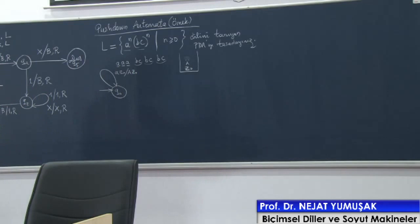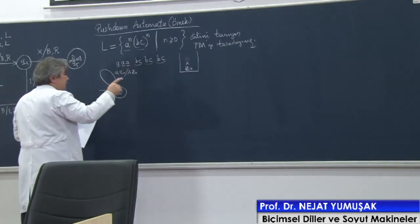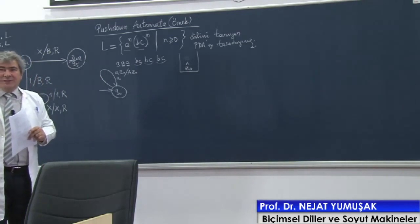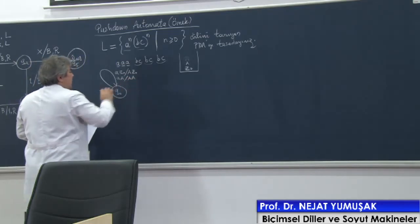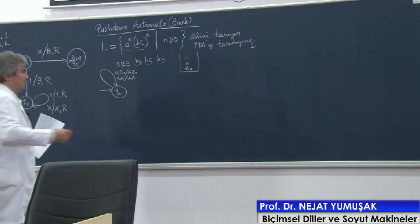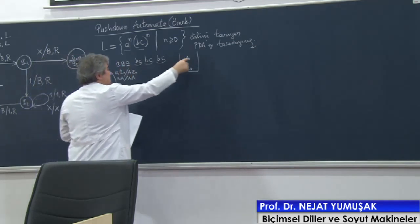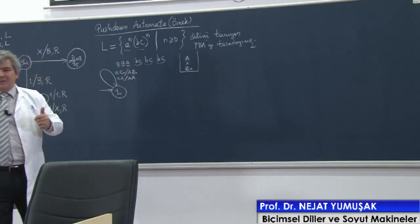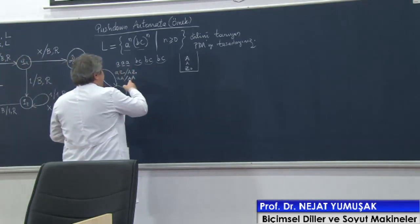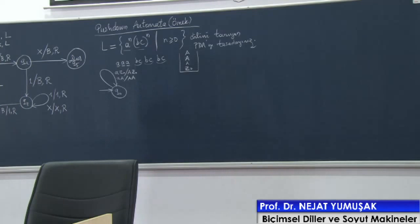Bu birinci durum. Bir de ne olabilir? Siz A okuduğunuzda — lütfen dikkat — yığıtta A simgesi var değil mi? Bu da çıkabilir karşıma. Buna karşılık yığıta bir A eklemeniz lazım. Gene A okudum, yığıtta A olması lazım. Yani sadece olabilecek durumların hareket fonksiyonunu yazıyorum. Bu benim işimi çok kolaylaştıracak. Bir A daha ekleyebilirsiniz. Q0 durumundayken karşıma çıkabilecek bütün durumları şu anda modellemiş oldum.